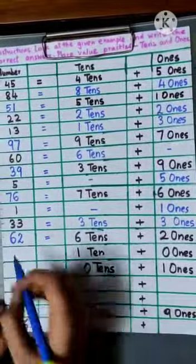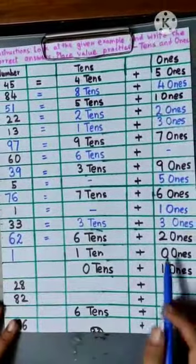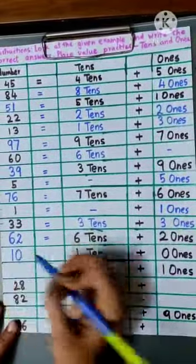Then there is 10. That means we have to write 1, and then 0 ones. That means 0.